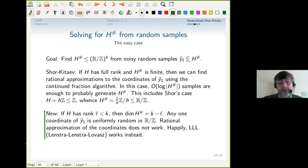The new case is if you have rank l less than k. The dimension of H^♯ is k minus l, and any one coordinate is just junk—you can't fix individual coordinates. You also don't know a change of basis to fix the coordinates collectively in advance. If you knew that, the whole problem would be easy. So rational approximation of the coordinates does not work.